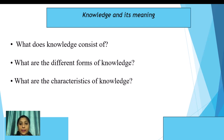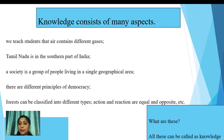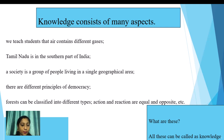Knowledge consists of many aspects. For example, we teach students that air contains different gases, Tamil Nadu is in the southern part of India, a society is a group of people living in a single geographical area, there are many principles of democracy, forests can be classified into different types, and actions and reactions are equal and opposite. Among these examples you may find facts, principles, concepts, laws, theories, etc.